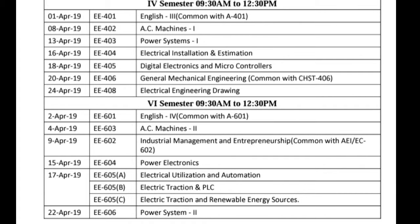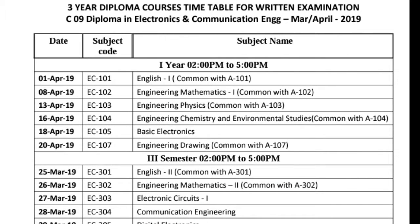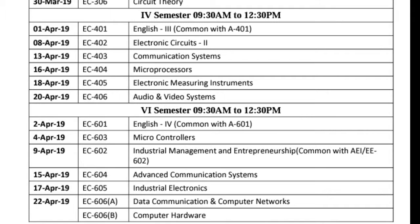The sixth semester for Electrical and Electronic Engineering. Next branch is Electronics and Communication Engineering — date, subject code, subject name — first year, then third semester and fourth semester, followed by fourth semester and sixth semester.